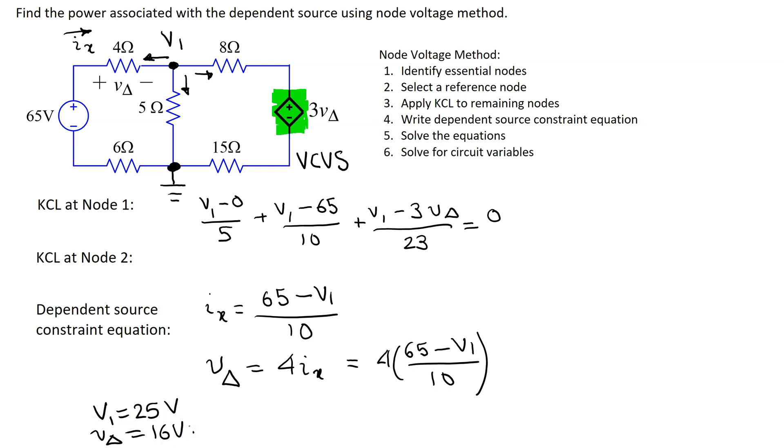Now, we can solve for the circuit variables and in this case we need to solve for the power associated with the dependent source. In order to do that let us find this branch current IY through the dependent source and using Ohm's law this IY is given by V1 minus 3 V delta over 23 and we can substitute values and this gives 25 minus 3 times 16 over 23 and this gives minus 1 amp.